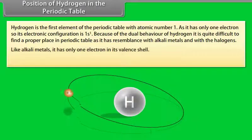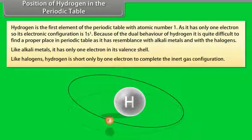Like alkali metals, it has only one electron in its valence shell. Like halogens, hydrogen is short only by one electron to complete the inert gas configuration.